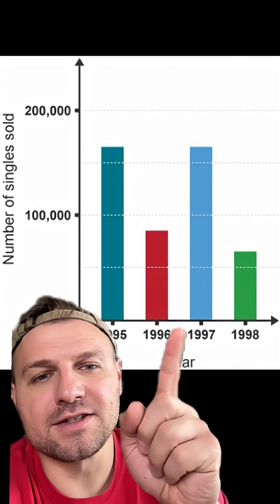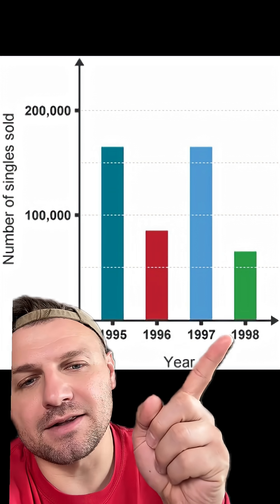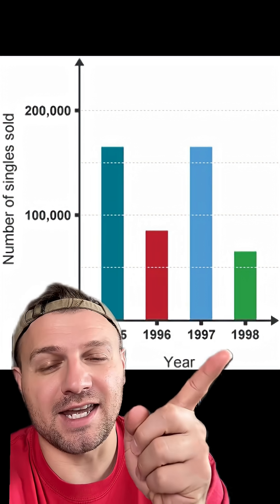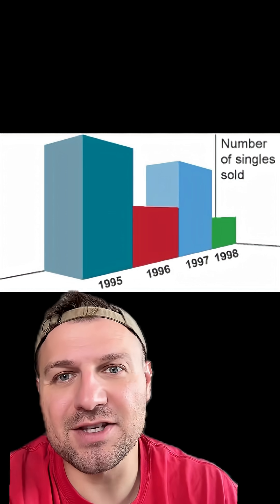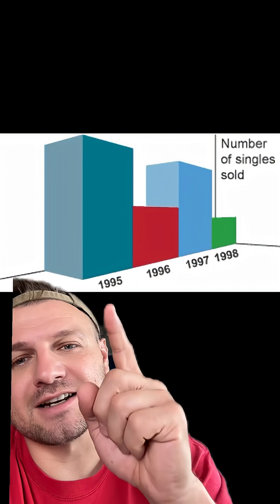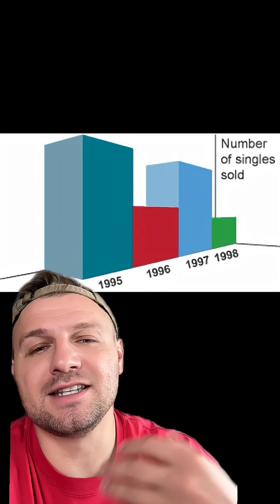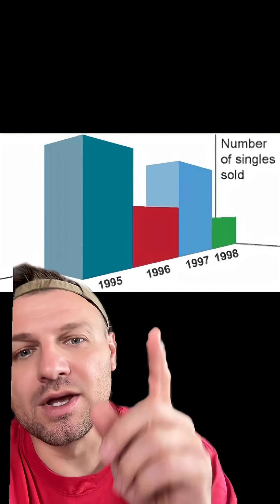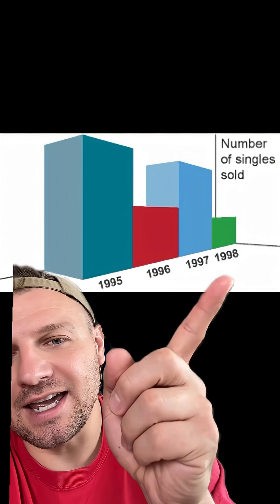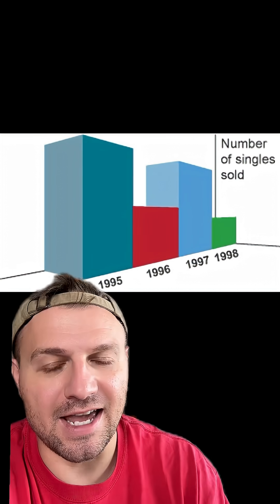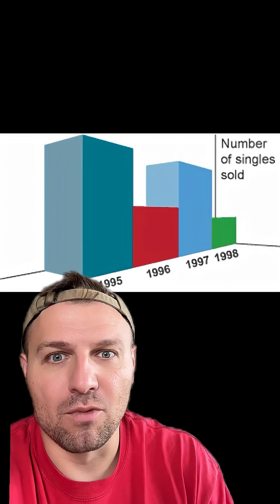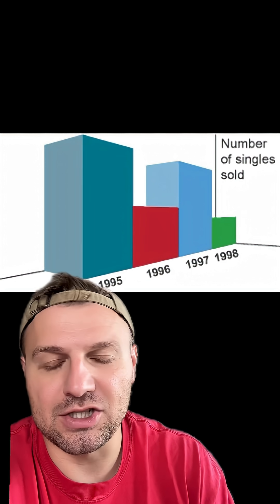Here you can see that 1995 is probably double or more than 1998, but in the original graph, 1995 looks significantly more than just double 1998 since it's at an angle and the bars are more of a 3D shape.